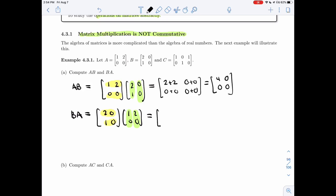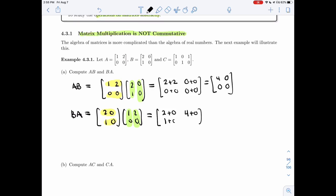So 2, 0, 1, 0. That's 2 plus 0. Then I get 4 plus 0. I get 1 plus 0. And I get 2 plus 0. So the matrices that I get are really different.